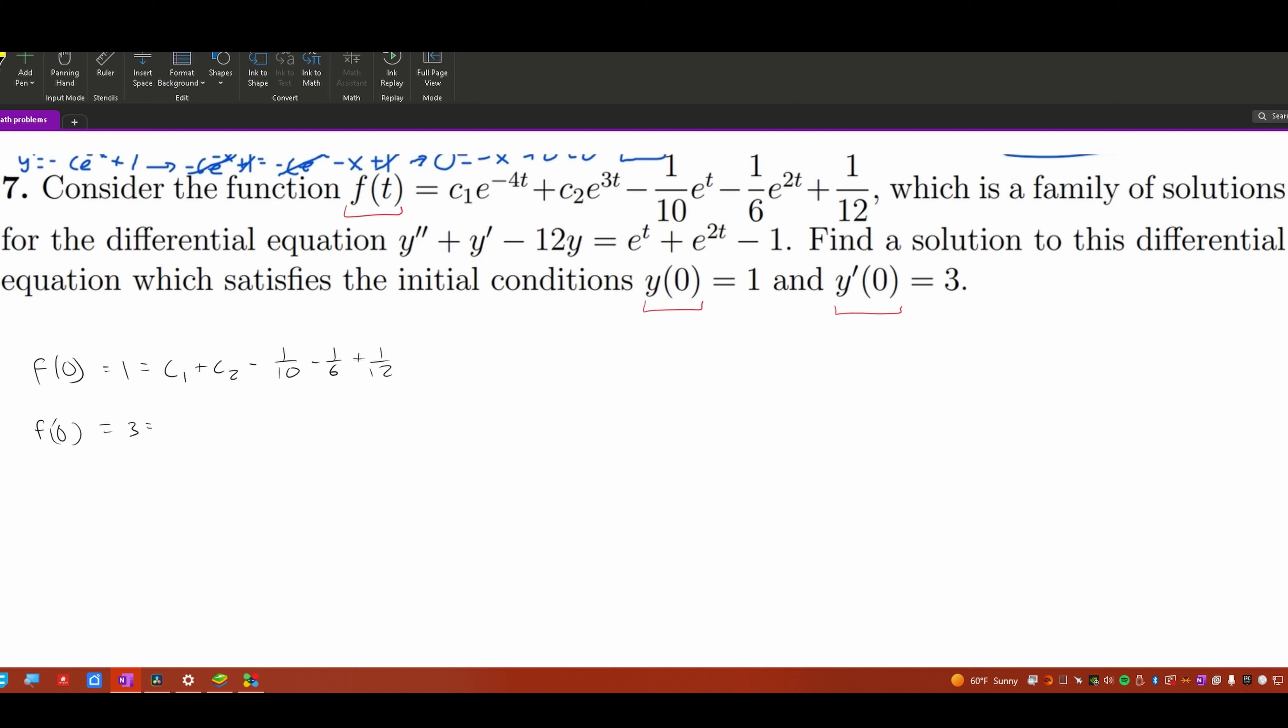So this is going to give us a negative 4, and then we'll have c1 e^(-4t) plus, and then we'll have 3c2 e^(3t), and then we'll have a minus 1 over 10, this is still e^t, and then minus, now the 2 is going to come out, so that's going to give us a 1 over 3, and then e^(2t), and then this is just going to become 0, the 1 over 12.